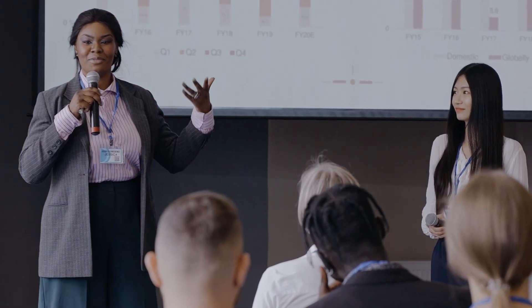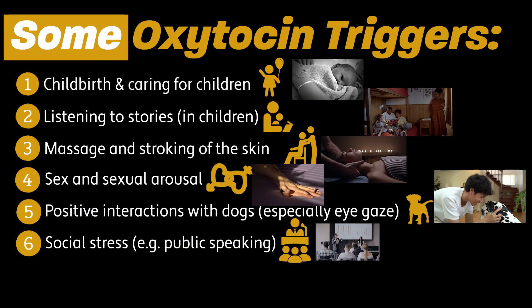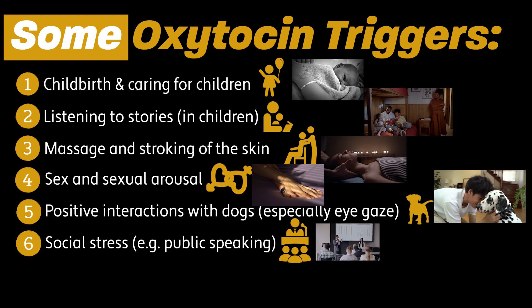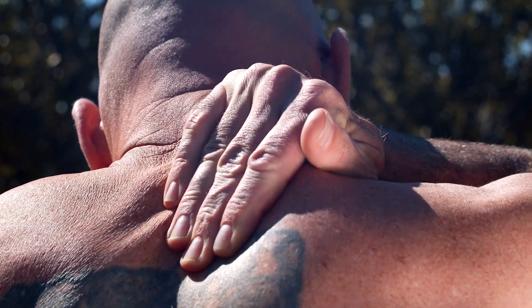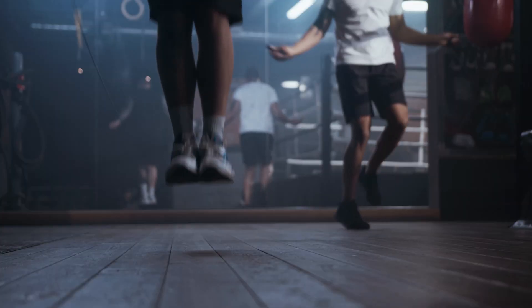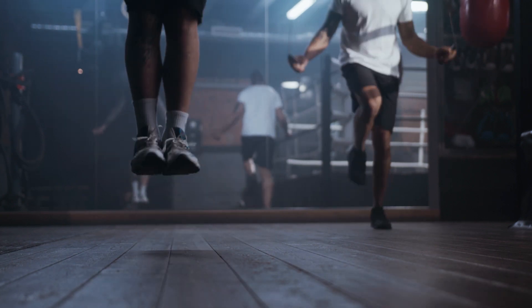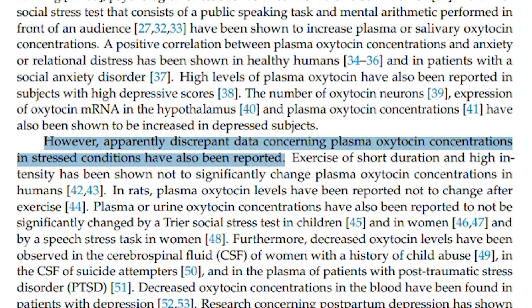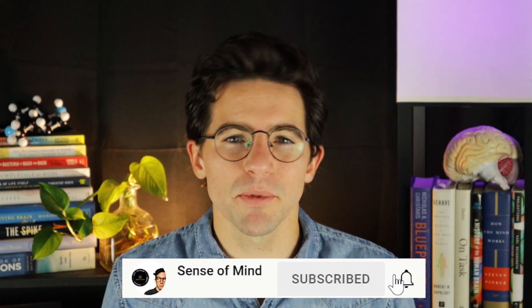Some studies have even found that your dog's oxytocin levels go up too. Oxytocin is not only released during positive social interactions — studies have shown that social stress, such as public speaking, can increase oxytocin, but this result may be more common in women with anxiety. Non-social stressors like pain and physical exercise may also increase oxytocin concentrations, but the relationship between stress and oxytocin is murky. It depends heavily on the type of stress, context, gender, and individual factors.